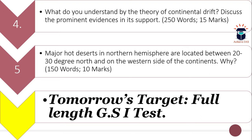The fifth question is: 'Major hot deserts in the northern hemisphere are located between 20 to 30 degrees north and on the western side of the continents — why?' These two questions have been directly picked from previous year papers without alteration of even a single word, because coverage of previous year examinations is also important. These are the two questions from your static topic, and tomorrow's target is a full-length GS1 test.